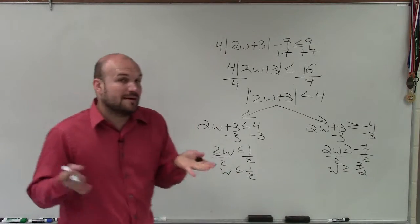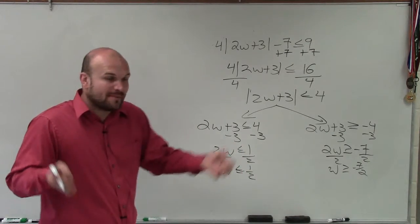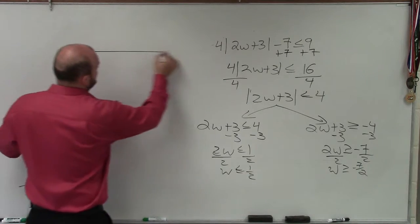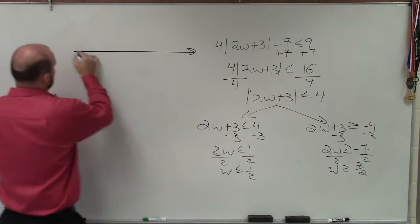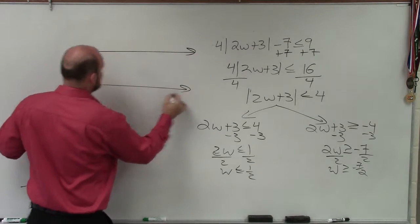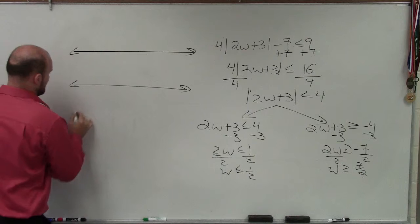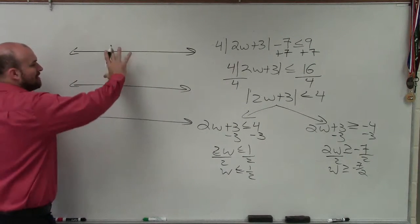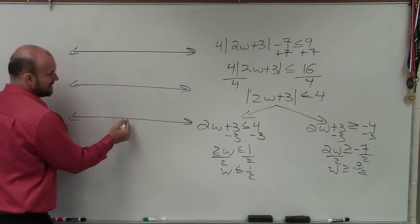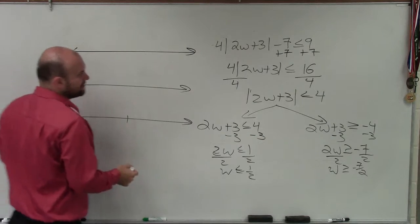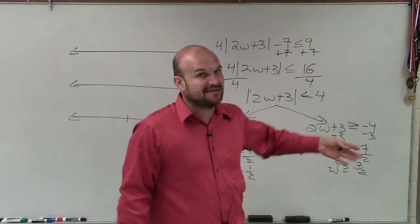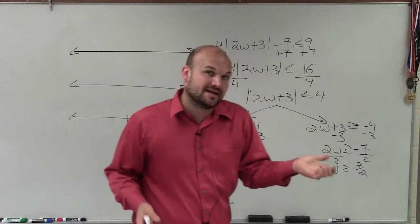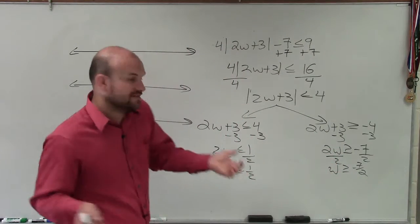So again, remember, when we're dealing with an 'and' inequality, we're only concerned about where the two graphs intersect. So what I'm going to do is graph over here. When I'm graphing a compound 'and' inequality, I'm going to graph them separately and then graph them together. Negative 7/2 is negative 3.5 in decimal form.